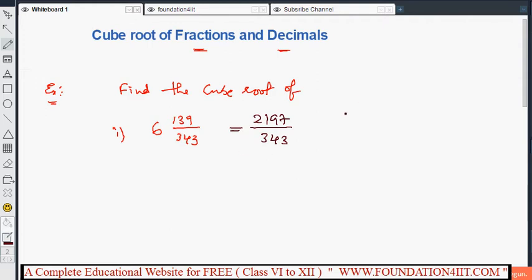We ought to find out the cube root of this. We need to find out separately for numerator and denominator. Prime factorization method I'm going to apply. 2197 we need to do prime factorization method. At the same time, 343 also we need to do.